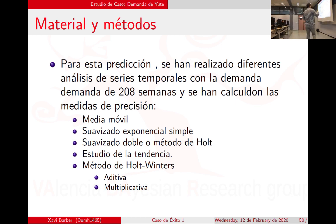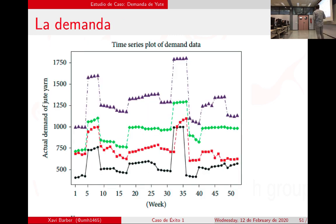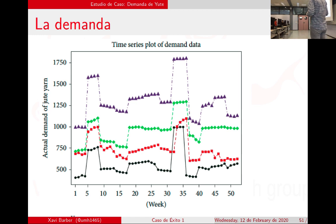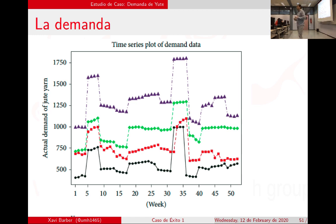Van a aplicar varios métodos: media móvil, suavizado exponencial, Holt-Winters aditivo y multiplicativo. Esta es la serie pintada de una forma distinta a la que estamos acostumbrados: en vez de pintar toda la serie seguida, la pinta por años —aquí abajo tenemos las 52 semanas y cada color corresponde a un año— lo que permite ver cómo fluctúa de un año a otro.